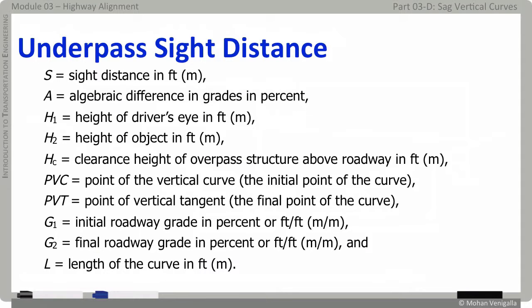All but one of these variables is familiar to you. Here S is sight distance — meaning it is available distance you can see under the conditions, not necessarily stopping sight distance. The new variable here is HC, which is the clearance height of the overpass structure above the roadway in feet or meters.